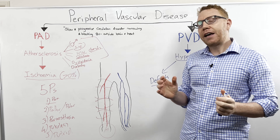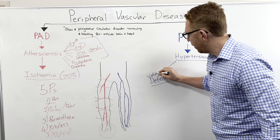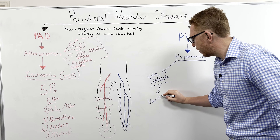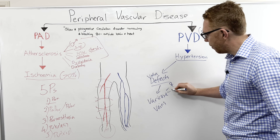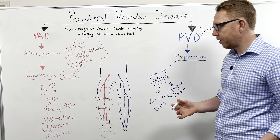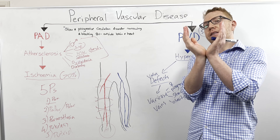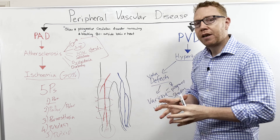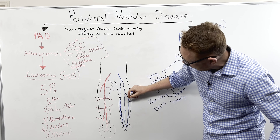Valve defects are fairly common in the superficial veins of the leg, leading to a condition known as varicose veins. Risk factors include female sex — particularly with multiple pregnancies — standing occupations where you spend a lot of time on your feet, and obesity. The valves become defective and incontinent, blood pools and the veins become distended and visible through the skin on the outside of the legs.